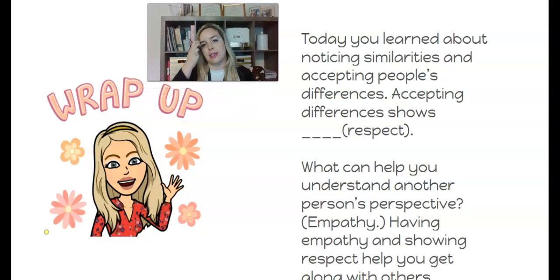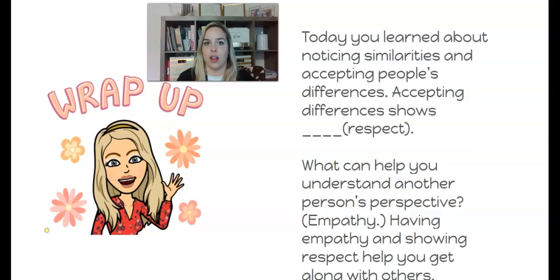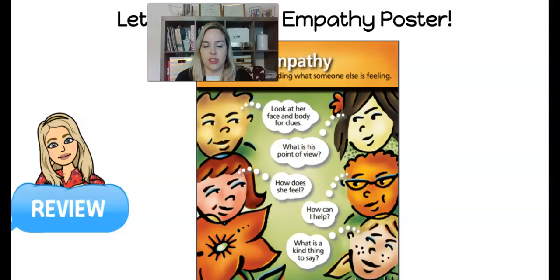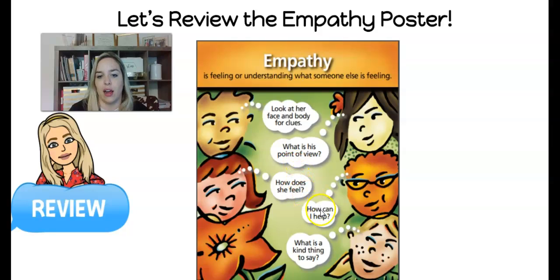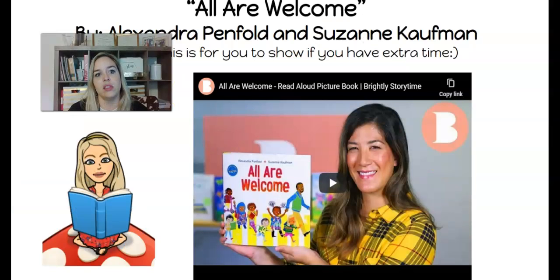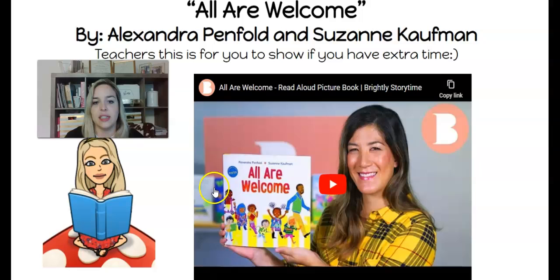Today you learned about noticing similarities and differences and accepting people's differences. Accepting differences shows respect. What can help you understand another person's perspective? Empathy. Having empathy and showing respect helps you get along with others. Let's review the empathy poster: empathy is feeling or understanding what someone else is feeling. You can look at their face and body for clues. You can figure out what their point of view is — how does she feel, how can I help, what is a kind thing to say? We're going to end our lesson with a book — one of my favorites — called All Are Welcome by Alexandra Penfold and Suzanne Kaufman.